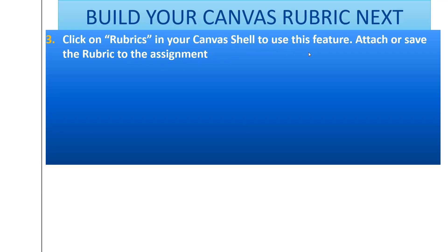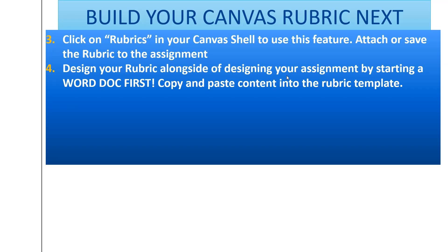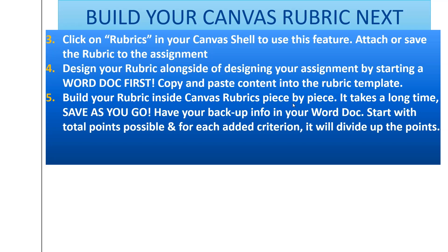You're going to build your Canvas rubric next. Click on rubrics in your Canvas shell and attach the rubric to that assignment. Design the rubric alongside the assignment, starting in a Word doc first — so many things can happen, and designing a rubric is super time-consuming. But you're putting in the work first, and the payoff is that grading becomes much more efficient. You don't want hours of work to evaporate. So: Word doc first, then construct or build your rubric inside Canvas rubrics piece by piece — and don't forget to save as you go.